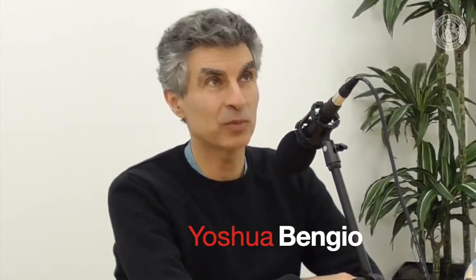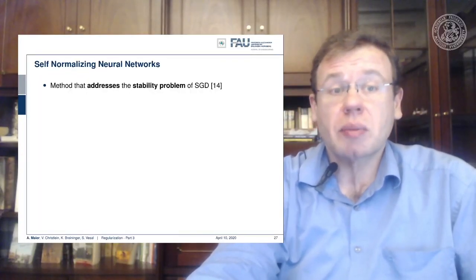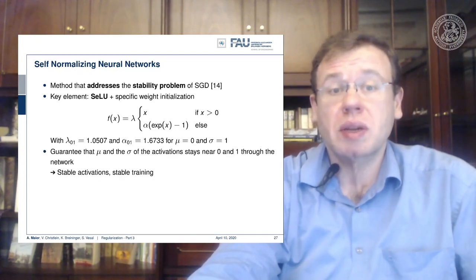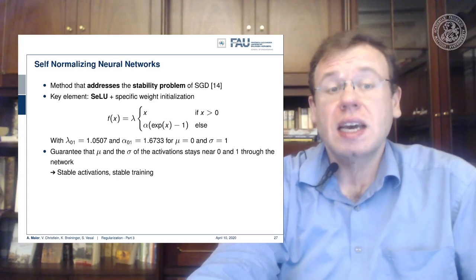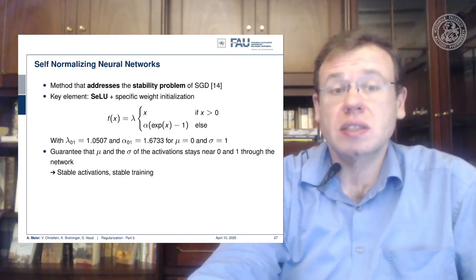What is clear to me is that engineers and companies and labs and grad students will continue to tune architectures and explore all kinds of tweaks to make the current state of the art ever slightly better. Another tool that is also very effective are the self-normalizing neural networks. It also addresses the stability problem of stochastic gradient descent. And the key element here is the scaled exponential linear unit that we already discussed in the activation functions.